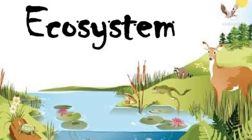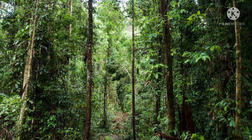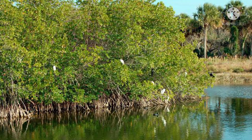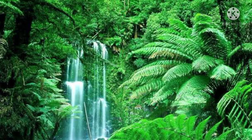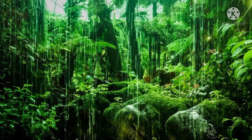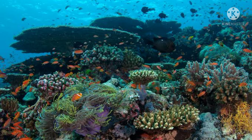Examples of ecosystems are the tropical rainforest, coral reef, and mangrove swamps. A tropical rainforest is simply an area where tall, mostly evergreen trees grow and with a high amount of rainfall. Coral reef serves as habitat for many animals.